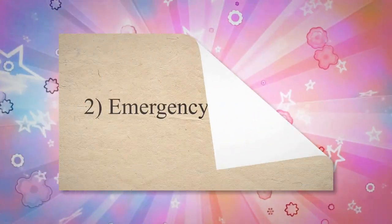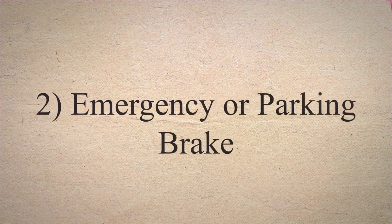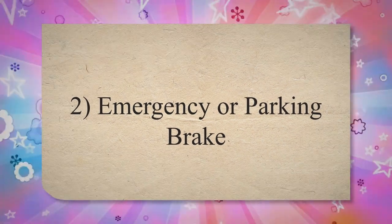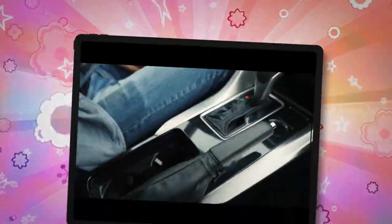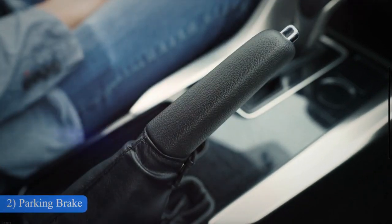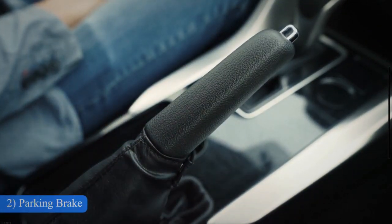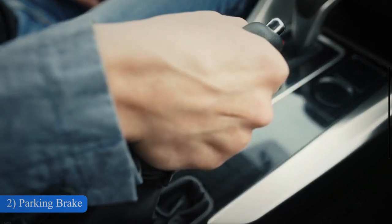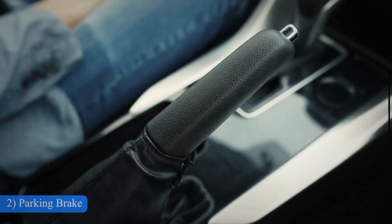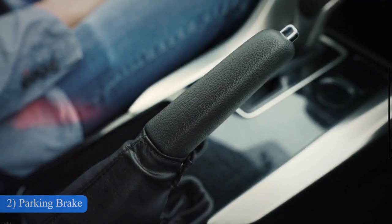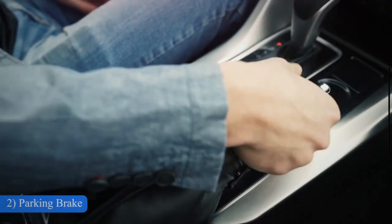2. Emergency or Parking Brake. The emergency brake serves as a hand lever for instant braking. It is installed in the central console of the vehicle. The parking brake is used to stop the car from moving backward or forward when parked.